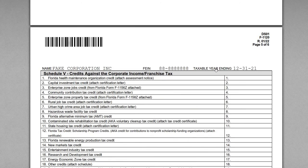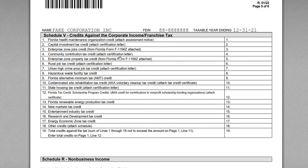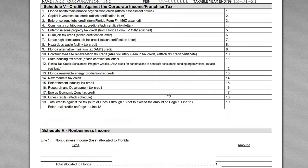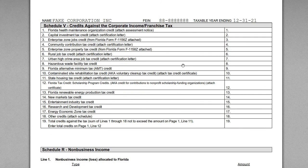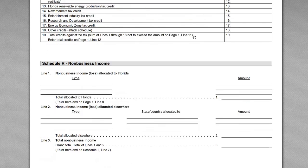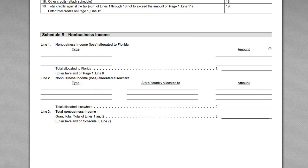Page five has Schedule V — credits against corporate income or franchise taxes. Various credits may apply here, such as R&D credits or economic opportunity zone credits. In this simple return none apply, but if your tax profile includes these elements, you'll want to include them since they are dollar-for-dollar reductions against your corporate tax. Schedule R covers non-business income, which also doesn't apply in this case.